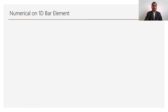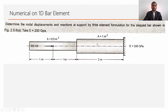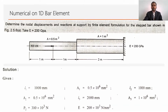The numerical on 1D bar element is to determine the nodal displacement, stresses, and reaction at support by finite element formulation for the stepped bar as shown in figure. This stepped bar has two cross sections: the first cross section has area 0.5 m², the second cross section has area 1 m². The length of both cross sections is 2 meters, and the modulus of elasticity for both cross sections is the same: 200 × 10³ N/mm².